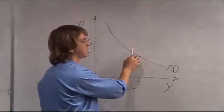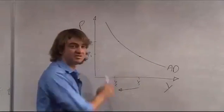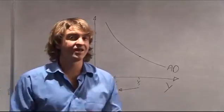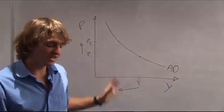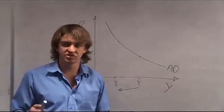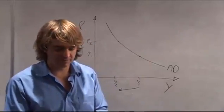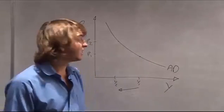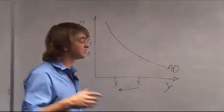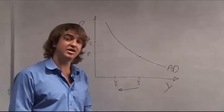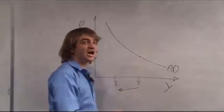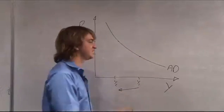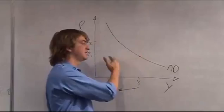Anything that shifts the investment demand schedule can shift the AD curve either to the right or to the left. Government spending increases will shift it to the right; decreases will shift it to the left. Finally, net exports are affected by income abroad — if a country overseas has high income, they'll purchase more of your exports and it'll shift to the right. However, if your exchange rate appreciates or depreciates, it'll shift accordingly — depreciation shifts it to the right.